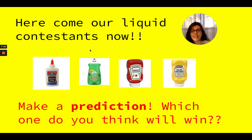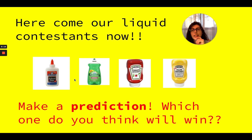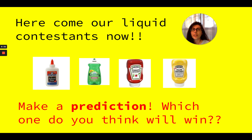Now make a prediction — which one do you think will win? Think about the viscosity of each of these liquids, about which one's the thickest and which one is the thinnest. I'm thinking ketchup is pretty thick and so is mustard, so I don't know if they have a good chance of winning. Maybe the glue or the dish soap could win? I'm going with the glue. You pick which one you think will win.